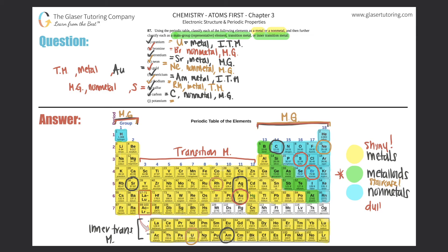Element j: Potassium. A lot of students think potassium's symbol is P, but it's not — phosphorus is P. Potassium is K, and it's element number 19. It's a metal because it's to the left of the staircase, and it's also a main group or representative element.